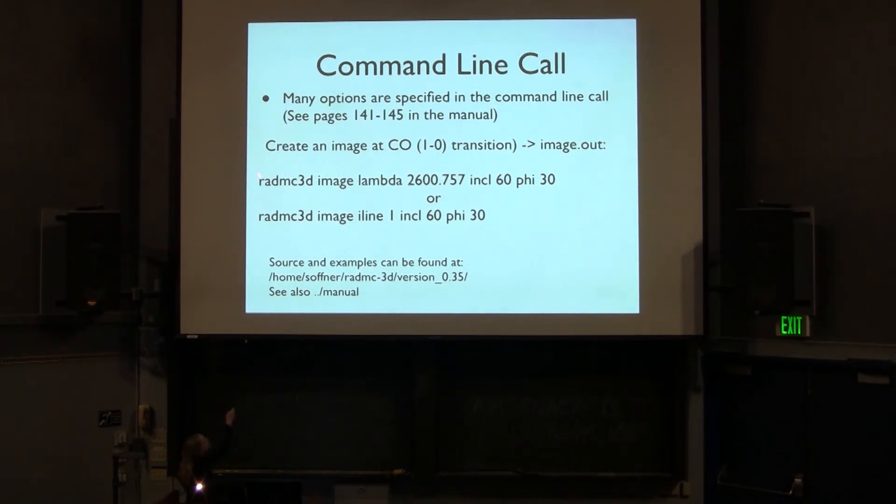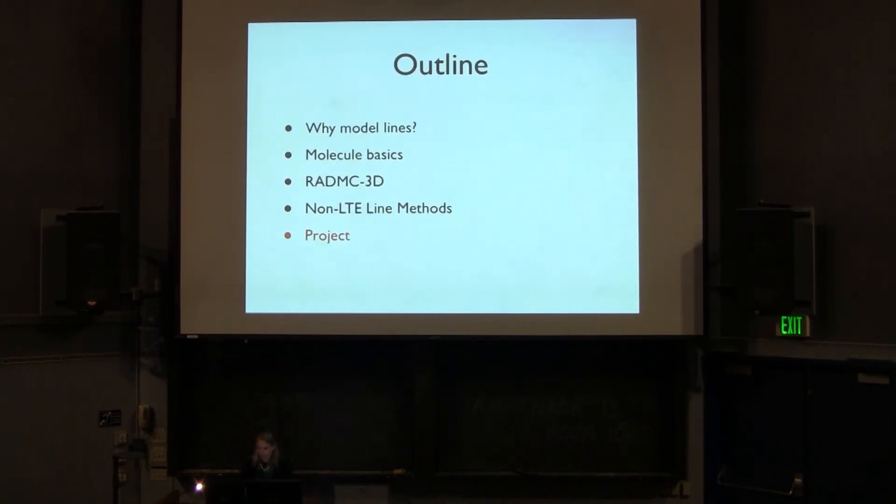So for this example problem, which creates the image in CO 1 to 0, basically says call radmc3d on the command line. Make an image at this particular wavelength at this particular inclination of 60 and 30 degrees. So this is kind of an off-center line of sight through this 3D cube. To help you out, there's actually quite a number of examples. You can find them in the install in my home directory under version 0.35 and the manual for radmc3d is also there.